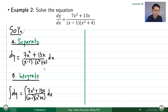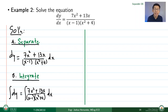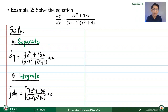Integration by parts also doesn't work cleanly here because of the fraction with two different denominator factors. The most obvious technique is partial fraction decomposition (PFD). With PFD, when we have a fraction that cannot be simply integrated, we decompose it into simpler fractions that can each be integrated individually.